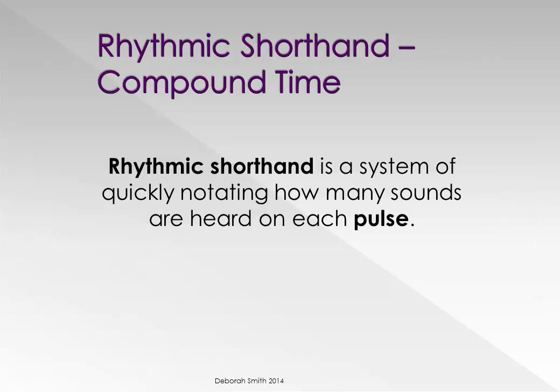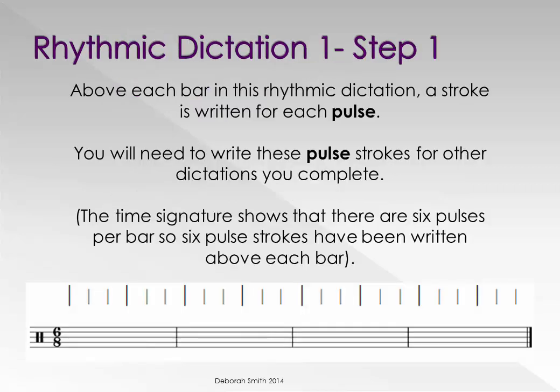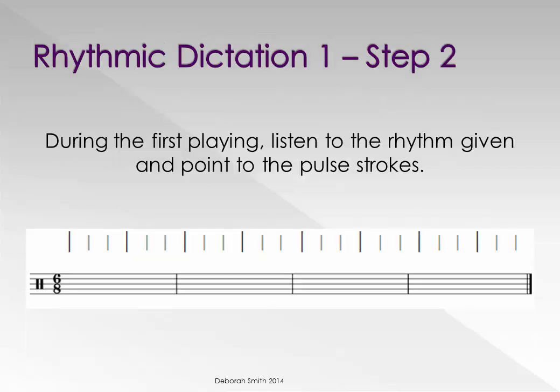Rhythmic shorthand is a system of quickly notating how many sounds are heard on each pulse. Rhythmic dictation step one: above each bar in this rhythmic dictation a stroke is written for each pulse. You will of course need to write pulse strokes for other dictations you complete. The time signature shows that there are six pulses per bar, so six pulse strokes have been written above each bar. During the first playing, listen to the rhythm given and point to the pulse strokes.